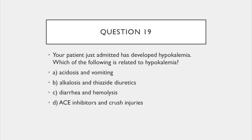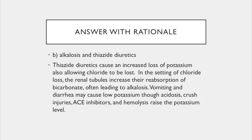Question 19. Your patient has developed hypokalemia. Which of the following is related to hypokalemia? A. Acidosis and vomiting. B. Alkalosis and thiazide diuretics. C. Diarrhea and hemolysis. Or D. ACE inhibitors and crush injuries. The answer is B: alkalosis and thiazide diuretics. Thiazide diuretics cause an increased loss of potassium, also allowing chloride to be lost. In the setting of chloride loss, the renal tubules increase their reabsorption of bicarbonate, often leading to alkalosis. Vomiting and diarrhea may cause low potassium, although acidosis, crush injuries, ACE inhibitors, and hemolysis raise the potassium level.